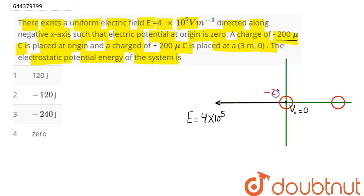This here is our minus 200 microcoulomb charge and this at (3,0) is our plus 200 microcoulomb charge. The potential energy of this system is being asked in the question. The distance between the two charges here is 3. So potential energy of the system is being asked.